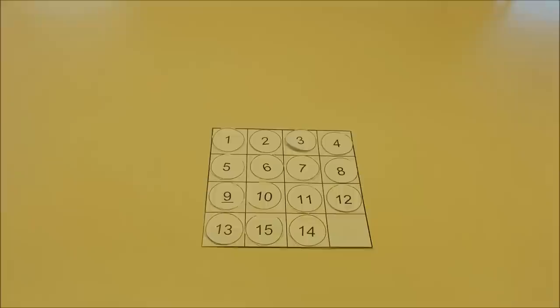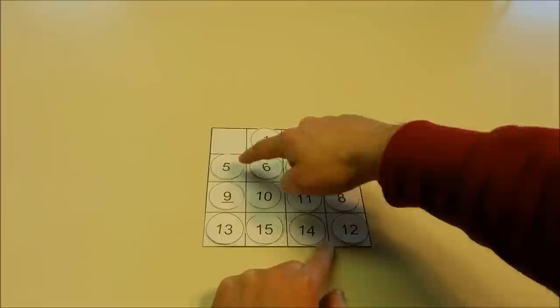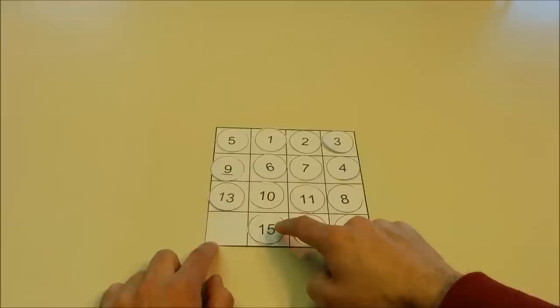All right, let's get to the solution. We'll start by sliding the disks around the perimeter of the grid. The reason is that we want to get the numbers 1, 2, 3, and 4 to be vertically on the right-hand side.